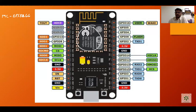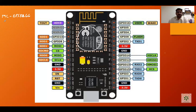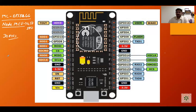As seen yesterday, the microcontroller converts high-level language to machine-understandable low-level language, and that functionality is also present here. The board is called NodeMCU and the cost of this board is around 450 to 500 rupees.